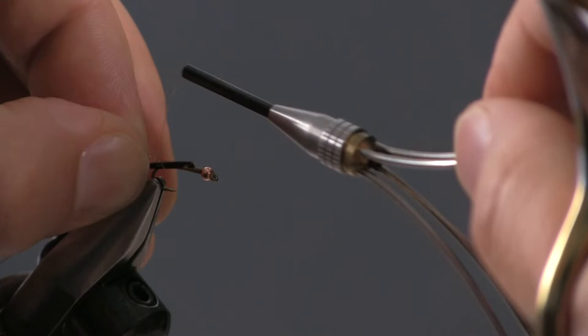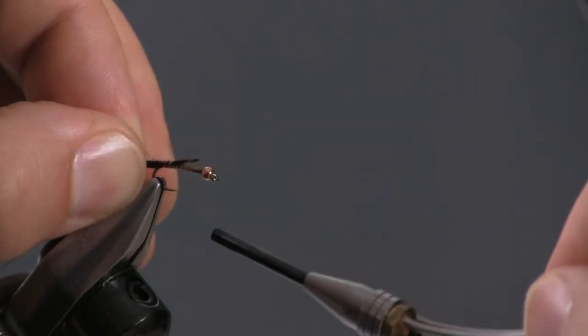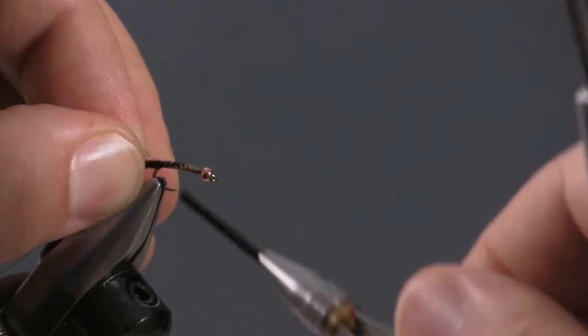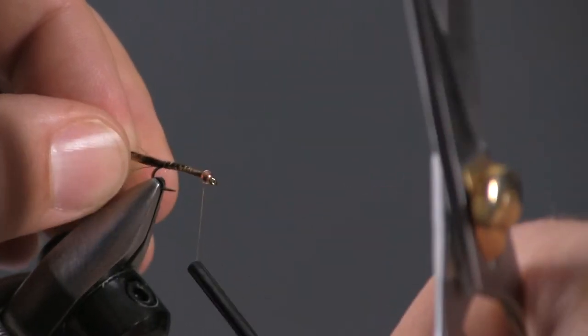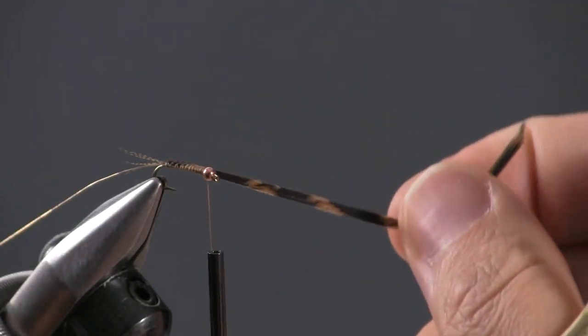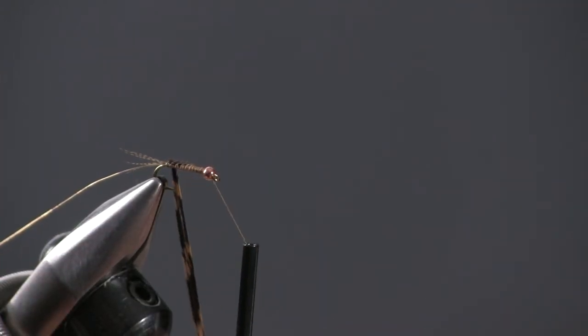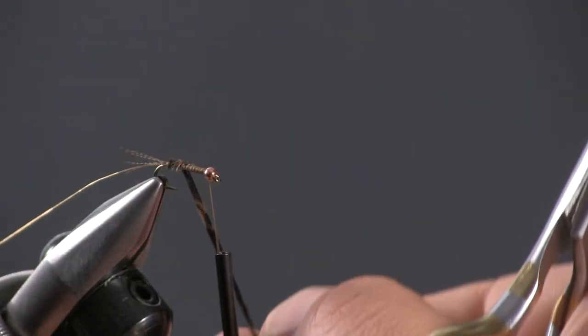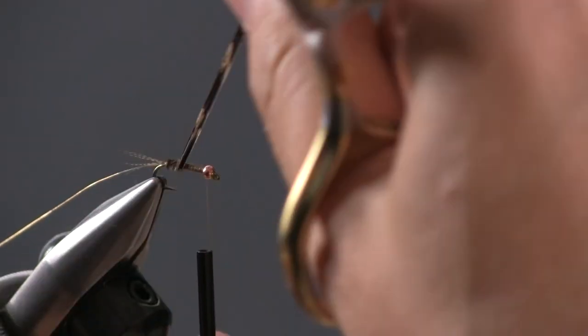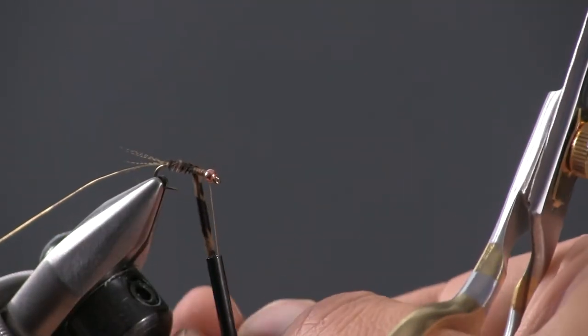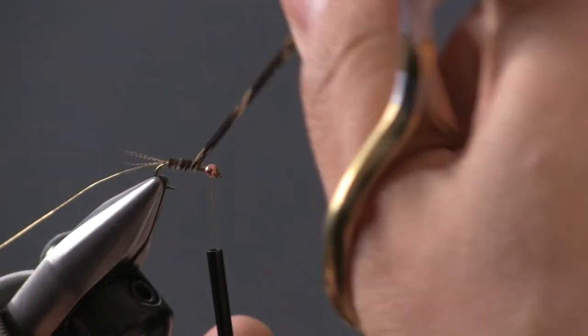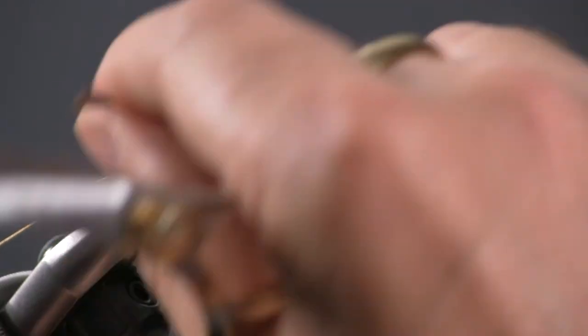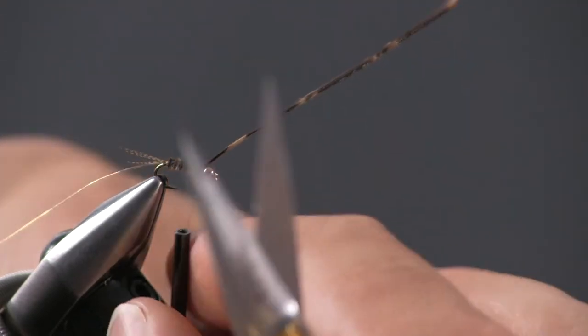And I tie this in with my terminating end up here in this section where the wing case is going to go. Again, I'm trying to keep this underbody really thin. So we're going to start by just wrapping these around the hook shank. And this is going to form a nice little slender, kind of fuzzy body on this nymph. And these just wrap real clean, slender, kind of tapered up. And we're going to tie those off.